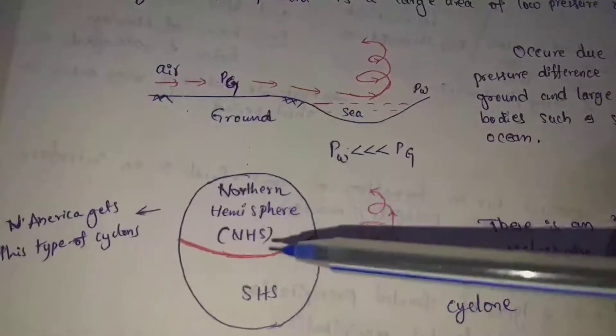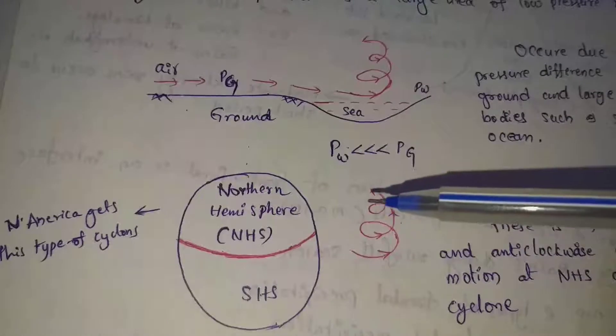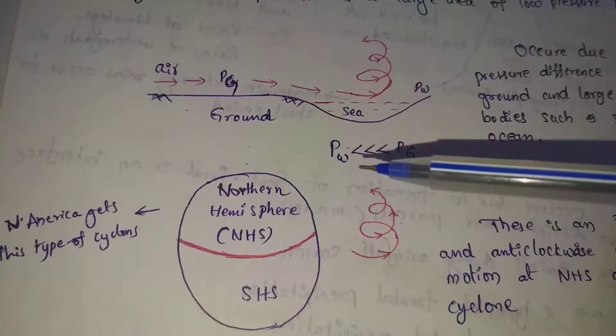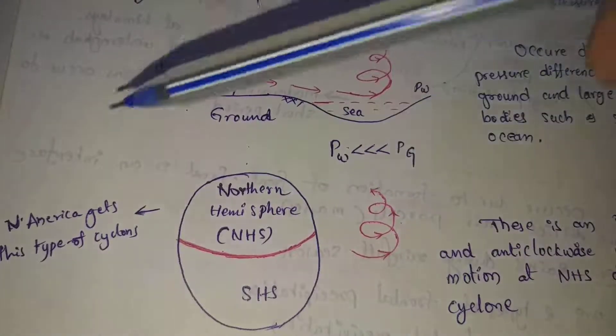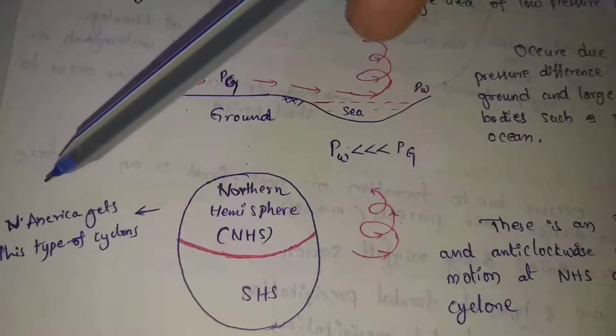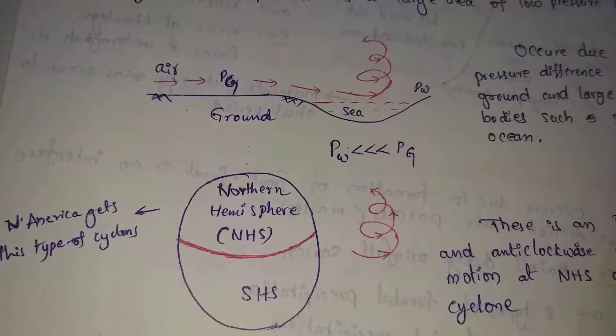The Northern Hemisphere is a cyclonic precipitation area. In North America, this preservation area is a type of cyclone.